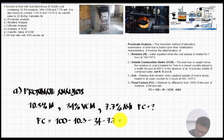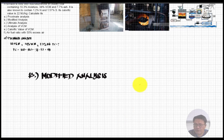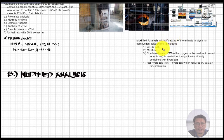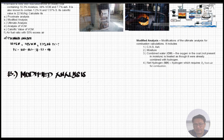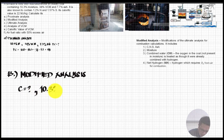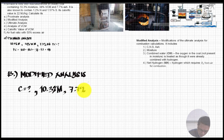The fixed carbon is therefore 48 percent. That completes Part A — the approximate analysis. Now moving to Part B, the modified analysis. The modified analysis requires us to determine: carbon, nitrogen, sulfur, ash, moisture, combined water, and net hydrogen. From the problem, we have moisture = 10.3 percent and ash = 7.7 percent.